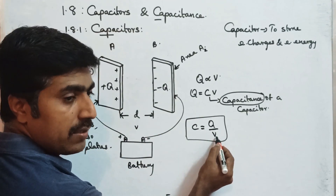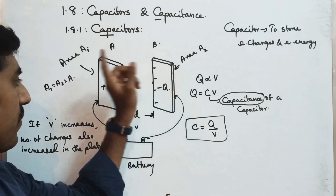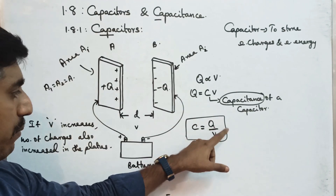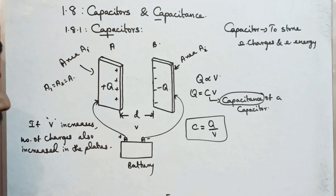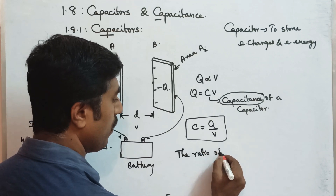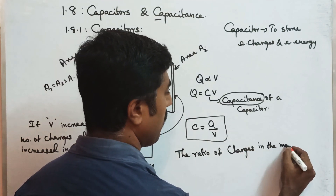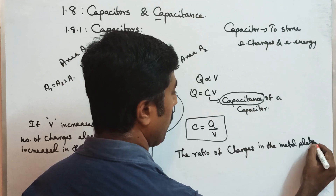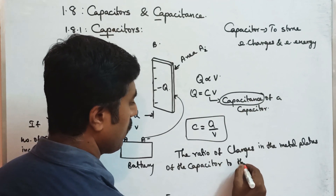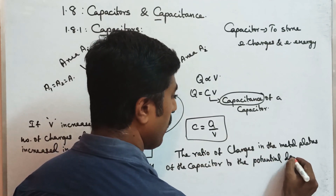The capacitance of a parallel plate capacitor is defined as the ratio of the amount of charge on the metal plates to the potential difference between the two metal plates. So capacitance C equals Q by V.